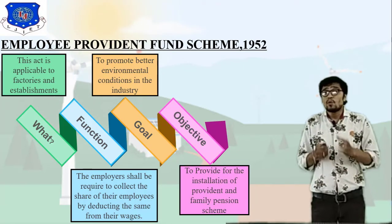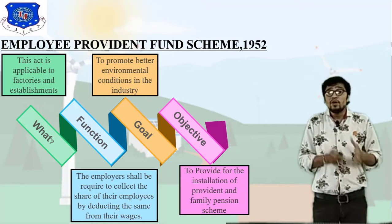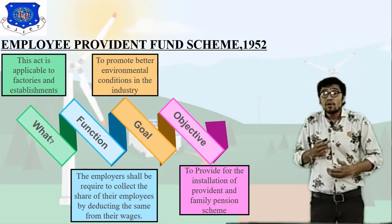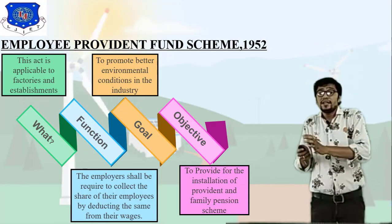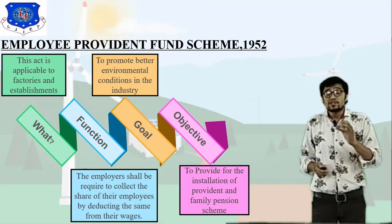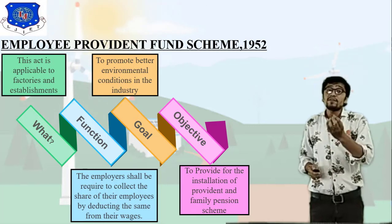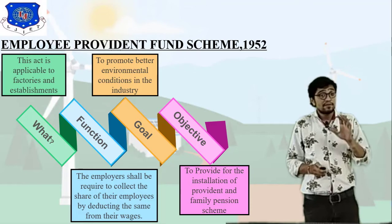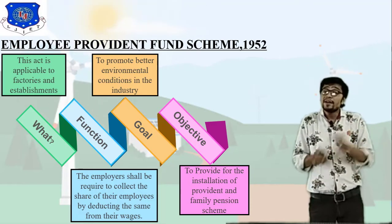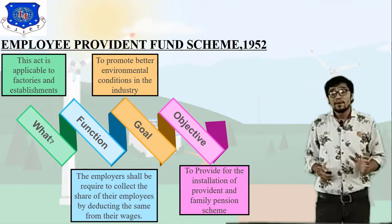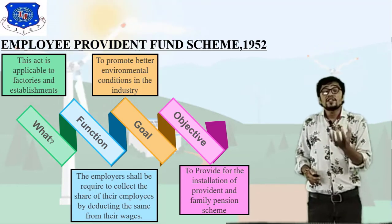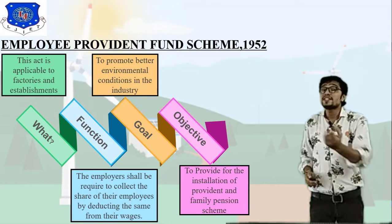The objective of the Employee Provident Fund Scheme is to provide for the installation of provident and family pension schemes. This is also called the family pension scheme.